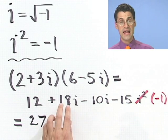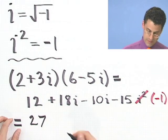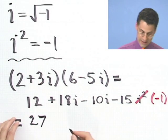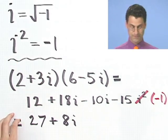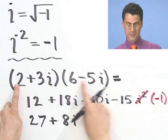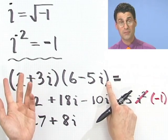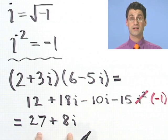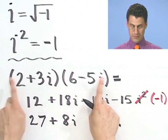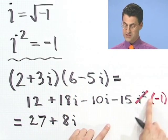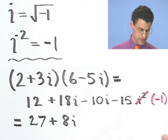And then I have an 18i minus a 10i, which gives me an 8i. So what's this product? It's some other complex number, and the complex number turns out to be that. So this number times that number equals that number. Okay? You see how I did it? I just foiled. Boom, boom, boom, boom, boom. And then just remembered that i squared is negative 1. Okay? That's all there is to it. Let's try one more.